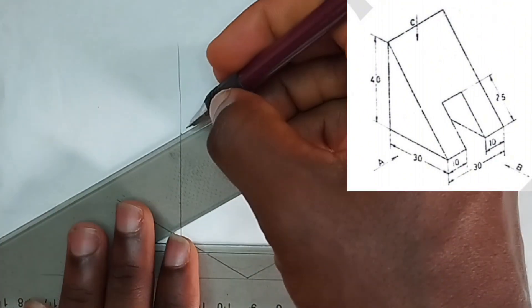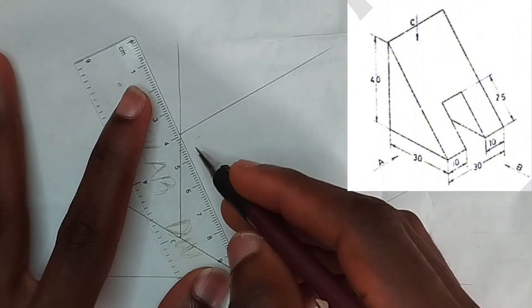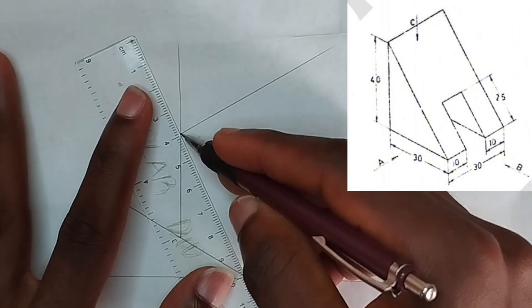So now from there we are going to pick our set square. There is another 30 degree to the top. So from this point we are going to be drawing a straight line using our ruler and our pencil to this place.